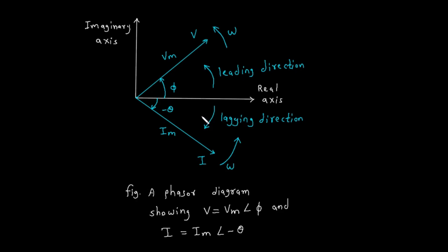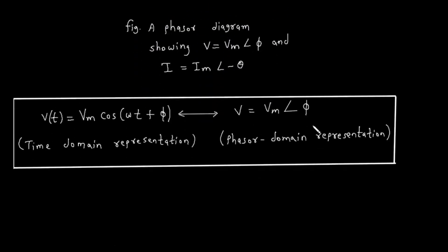This brings us to the final, and perhaps most important, summary box. It shows the direct equivalence between the two worlds of circuit analysis. On the left, we have the time domain representation: V of t equals Vm times the cosine of omega t plus phi — this is a function of time. On the right, we have the phasor domain representation: V equals Vm at an angle of phi — this is a single, constant complex number. This is the power of phasors: we have transformed a complicated, time-varying sinusoidal function into a simple pair of numbers, a magnitude and an angle. This makes solving complex AC circuits, which would involve difficult trigonometry and calculus in the time domain, as simple as basic algebra with complex numbers in the phasor domain.